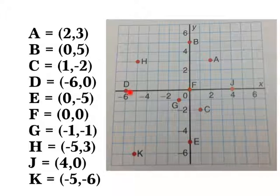point D is at (-6, 0), E would be at (0, -5), F is directly at (0, 0),